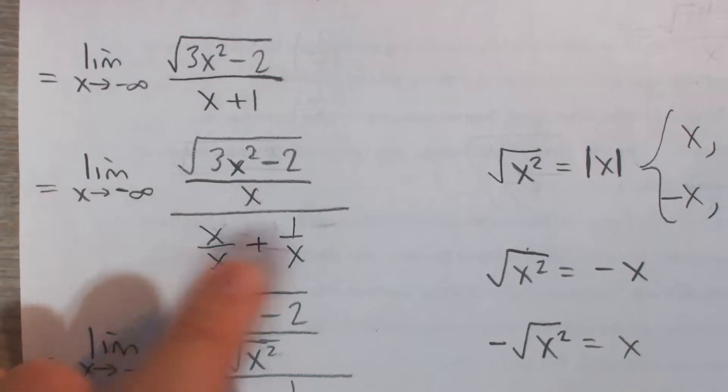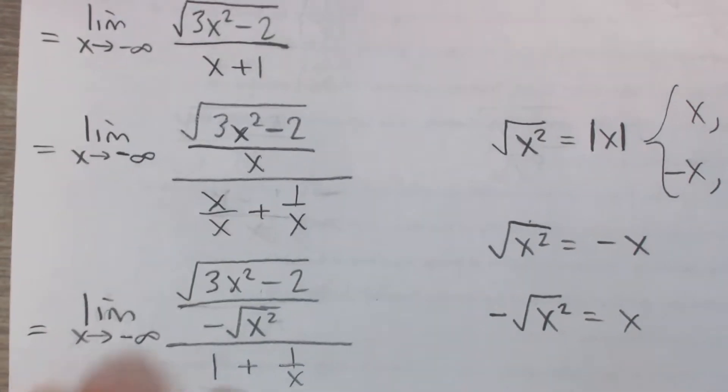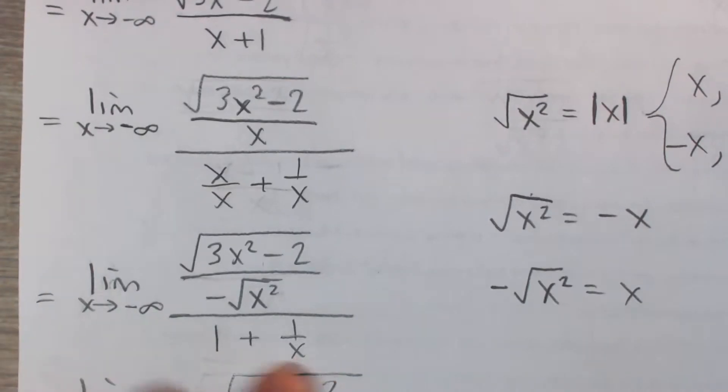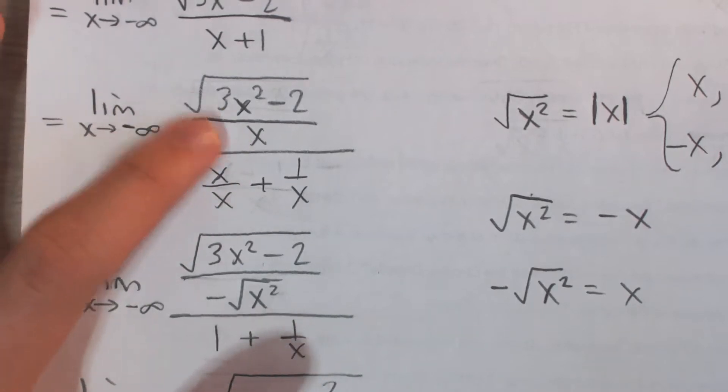And so you can see I have divided this by x, this by x, and that by x. In the denominator, we can simplify a bit, right? We get 1 and 1 over x, or x over x is 1. But in the numerator, it's kind of tricky. How do we simplify this?